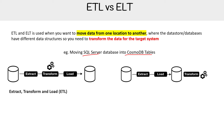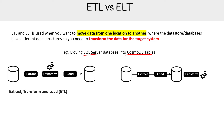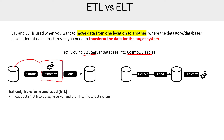Here we have our visuals for ETL and ELT. ETL stands for Extract, Transform, and Load. It loads the data first into a staging server and then into a target system. Even though it's not shown here, there's actually an intermediate virtual machine or server that data is loaded into temporarily for the transformations. When it's done, it outputs into the target system, and it's used for on-premise relational and structured data.